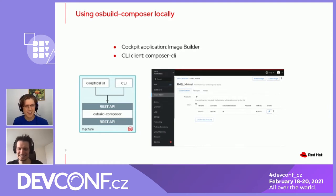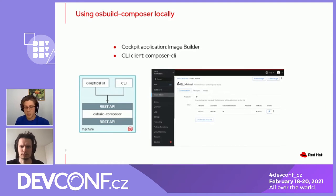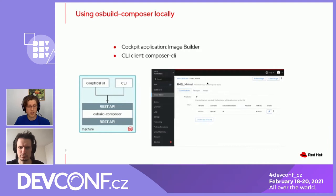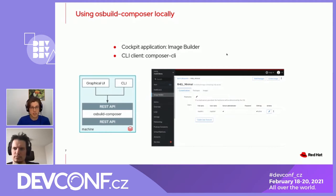For the CLI, if you want to feel like a hacker or automate things, you can use the CLI client called Composer CLI. The first demo is about the Image Builder application in Cockpit. We will use it to build a custom image, upload it to AWS, and verify that it booted.